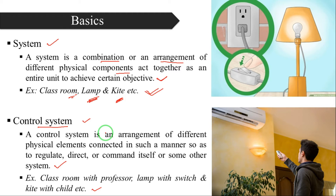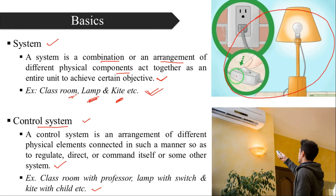Now coming to the lamp with switch: there is a lamp and a switch. By switching on and off, we are controlling the lamp, so this complete setup is called a control system. For the kite with child: the child is flying the kite and controlling its direction, so that complete setup is also called a control system. Similarly, a human operating the AC — that setup is called a control system.